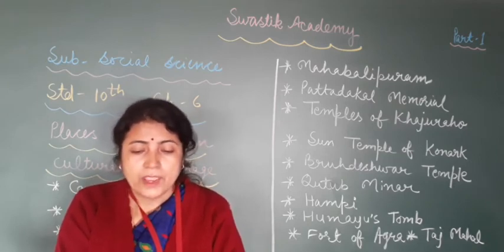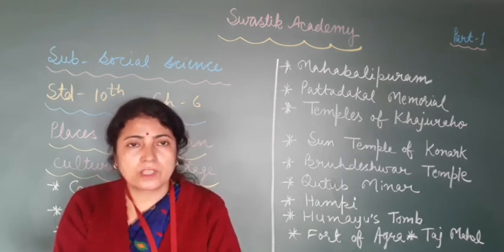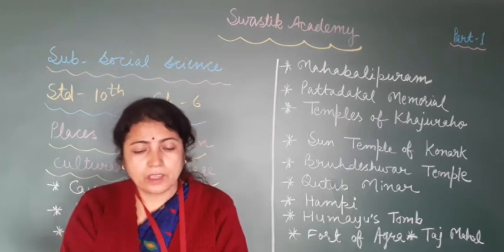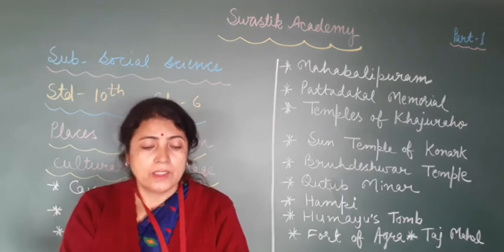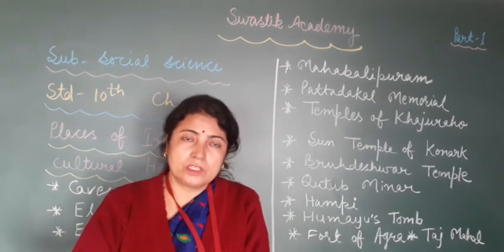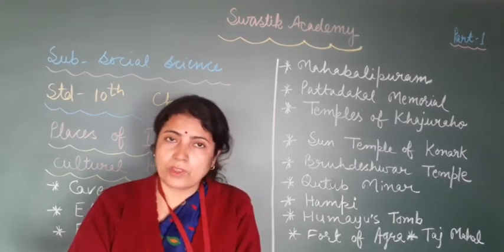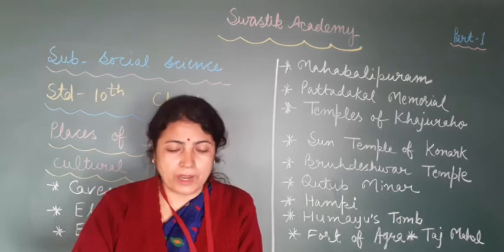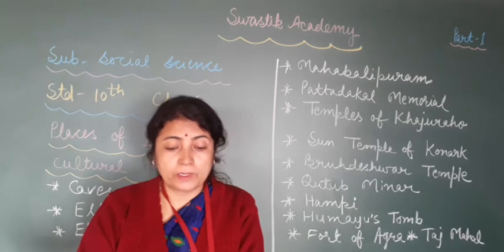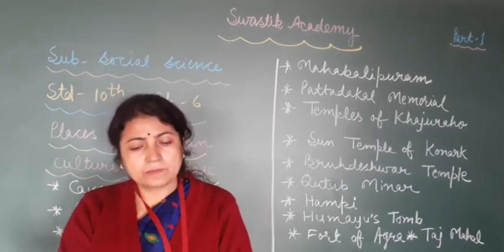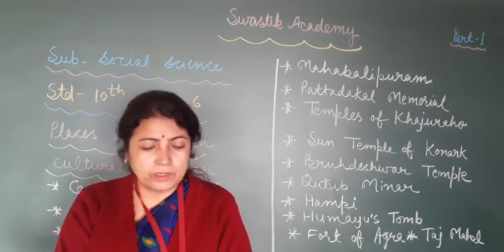The Kailasa temple is situated in cave number 16. It is 50 meters long, 33 meters wide and 30 meters high. This temple is carved out of a single massive rock and is adorned with beautiful doors, balconies and a series of pillars. The beauty of the temple cannot be described in words.